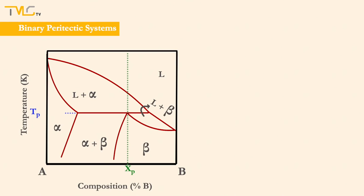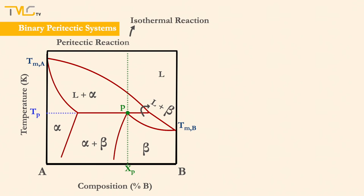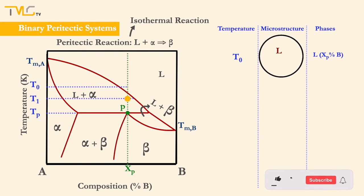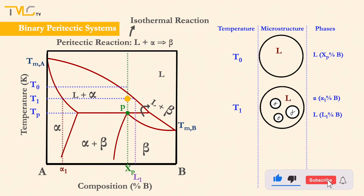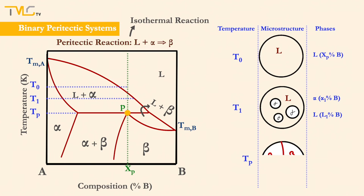If there exists a significant difference between the melting points of the two components, peritectic reactions may be seen. In peritectic systems, the point denoted as P is the peritectic point. During the isothermal peritectic reaction, one liquid and one solid phase transform into another solid phase. Let's consider a peritectic alloy having composition XP at temperature T0. It will first intersect with the liquidus line as it is cooled from the liquid phase. Then, the alpha phase will precipitate, which predominantly consists of the high melting point component in the phase diagram. Upon reaching the peritectic point, all the alpha and liquid phases transform into beta phase.